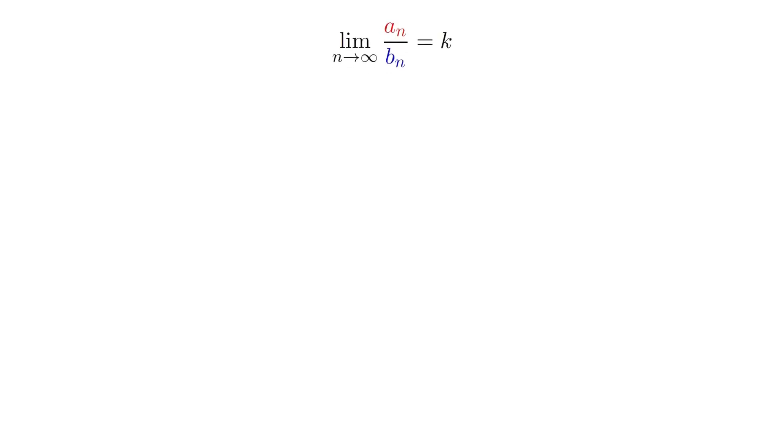Let's say the limit of a sub n over b sub n is equal to k, where k is some positive finite number. Think about what this means. It means that if n is very large, then the ratio a sub n over b sub n closely approximates k, and the bigger n is, the better the approximation.